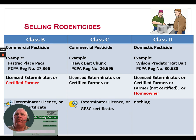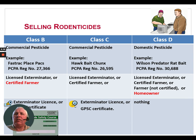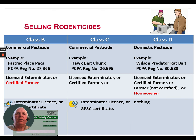When it comes to selling rodenticides, we follow the same basic rules. Class B pesticides — commercial pesticides such as Fast Track place packs — can be purchased and used by a licensed exterminator or a certified farmer, but they must present their grower certification or licensed exterminator license. Class C products work exactly the same way. Class D domestic pesticides — for example, Wilson Predator rat bait — can be purchased by homeowners as well as certified farmers, without any training or license required.